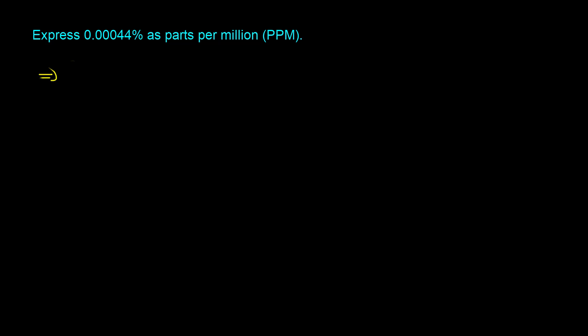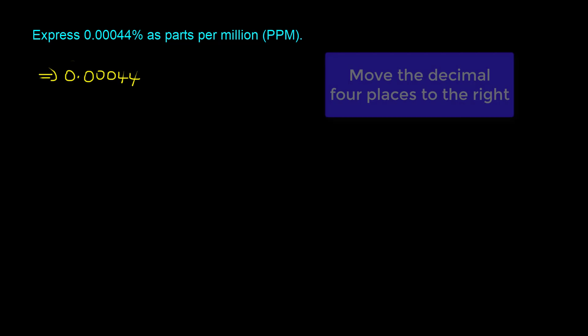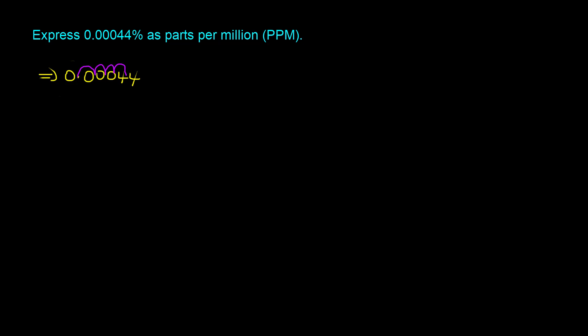Now let's apply the trick to another question. Express 0.00044% as parts per million. We take the percentage value and move the decimal four places to the right: 0.00044 → 1, 2, 3, 4. We end up with 4.4 PPM.